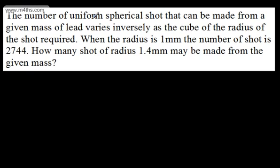In this question, we're told the number of uniform spherical shot that can be made from a given mass of lead varies inversely as the cube of the radius of the shot required. When the radius is 1 mm, the number of shot is 2,744. How many shot of radius 1.4 mm can be made from the given mass?